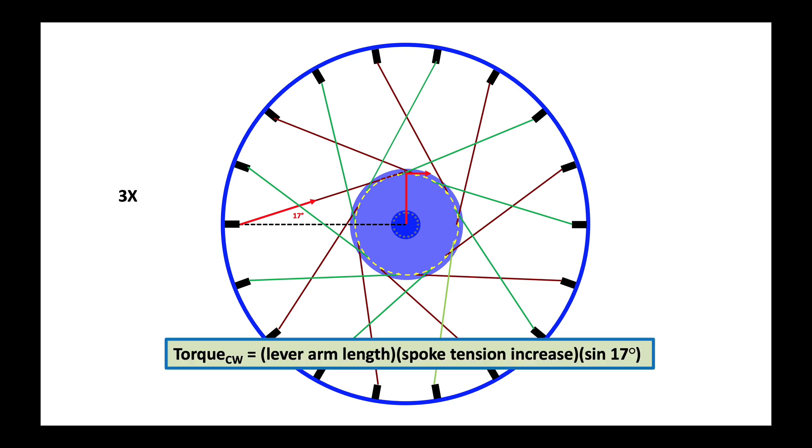Our torque in the clockwise direction is the length of the lever arm, which is that vertical red line, which is the radius of the hole flange circle, times the spoke tension increase, times the sine of 17 degrees. Now I might like that torque picture, but I don't want to have to live with that 17 degree angle of one of the spokes.